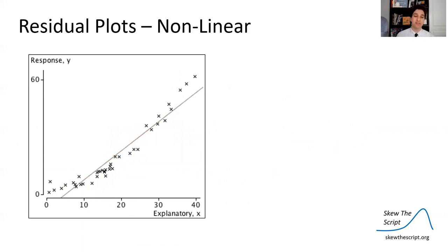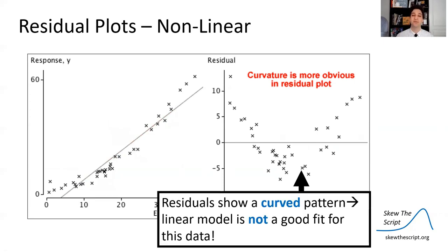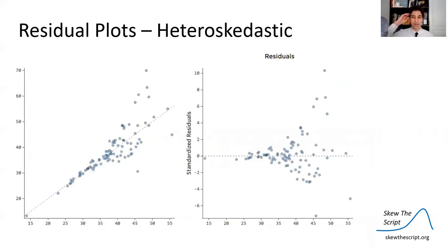Now, if there's a little curvature in the data and we plot the residuals alone, that really accentuates the curvature. We see the residuals tend to be positive for lower values, then negative for middle values, and then positive again. That's a clear curve pattern in the residuals. Because the residuals show a clear curve pattern, a linear model is not a good fit — we should probably use a model with some curvature to capture that pattern.